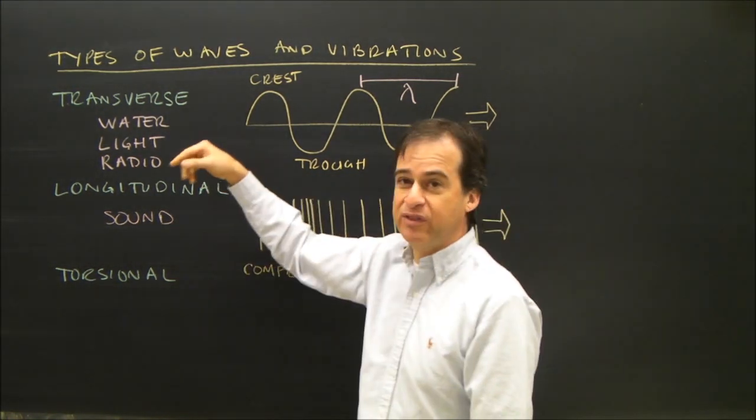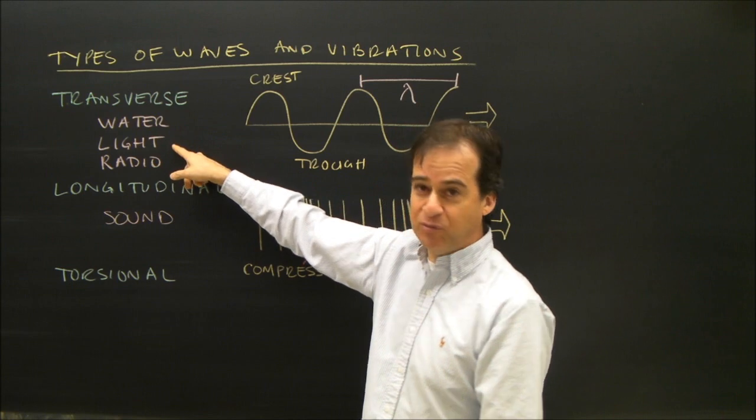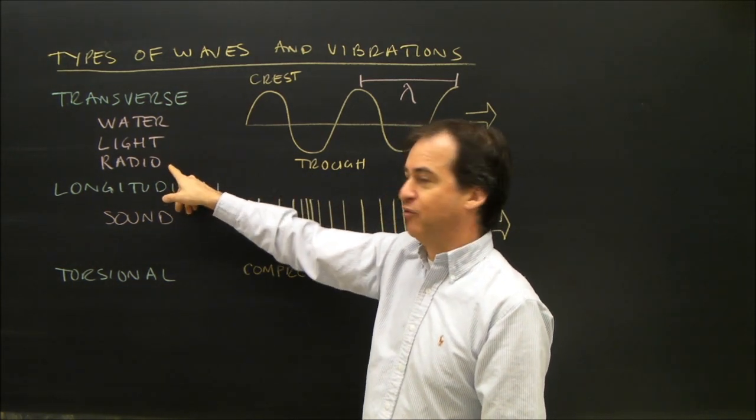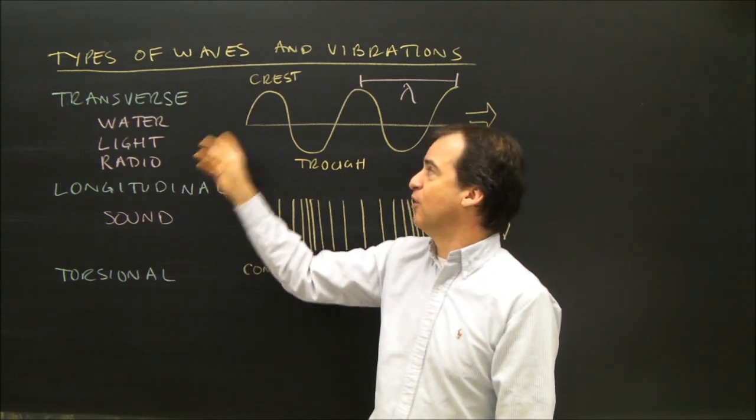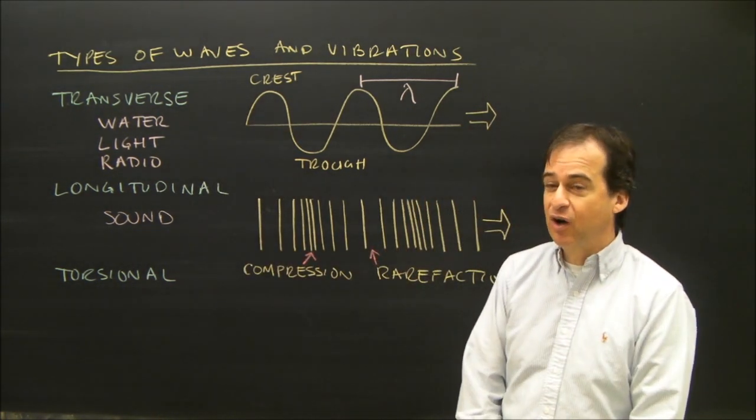The types of waves that you're familiar with that are transverse are water, light waves are transverse waves, and radio waves. The whole electromagnetic spectrum is made up of transverse waves. So they're very common.